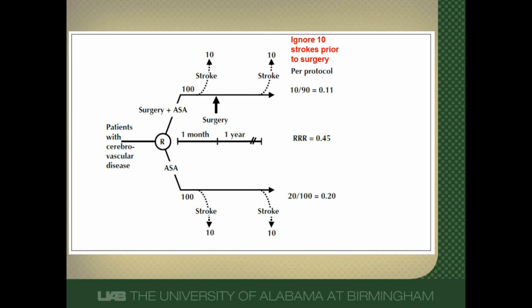Let's see what happens if we do an intention-to-treat analysis. Once you're randomized, everything that happens to you is analyzed in that group. We had 20 total strokes in the surgery arm and 20 total strokes in the aspirin arm — the event rates were absolutely the same. There was no difference in event rates between the two arms. So one of the things you can see is that intention-to-treat analysis is what we call conservative: it makes the two groups look more similar, whereas per-protocol analysis makes things look more different.